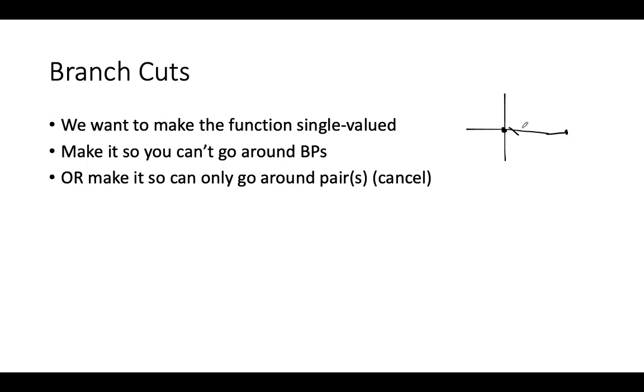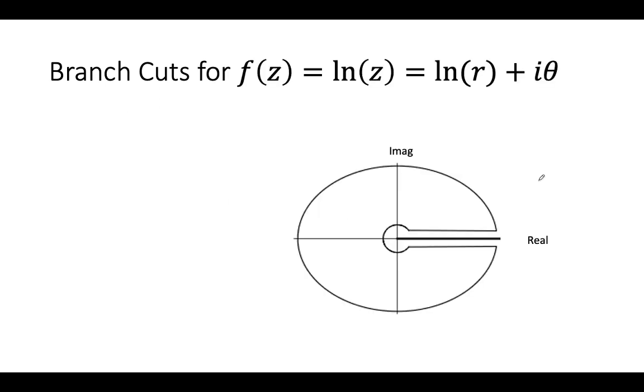In this case, if you go around two of them and pick up two factors of minus 1, that's perfectly fine because you've done nothing. It's the same as extending the domain of the function to be 4 pi in theta instead of 2 pi. So what we do is find the branch points and designate a branch cut between them, which is a forbidden region.